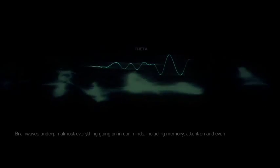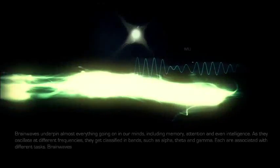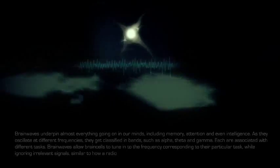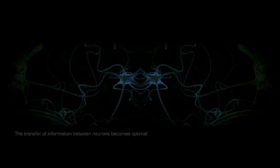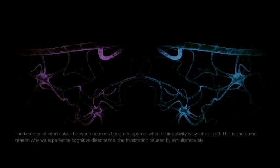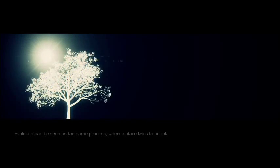Brain waves underpin almost everything going on in our minds, including memory, attention, and even intelligence. As they oscillate at different frequencies, they get classified in bands such as alpha, theta, and gamma. Each are associated with different tasks. Brain waves allow brain cells to tune into the frequency corresponding to their particular task while ignoring irrelevant signals, similar to how a radio homes in on different waves to pick up radio stations. The transfer of information between neurons becomes optimal when their activity is synchronized. This is the same reason why we experience cognitive dissonance, the frustration caused by simultaneously holding two contradictory ideas. Will is merely the drive to reduce dissonance between each of our active neural circuits.